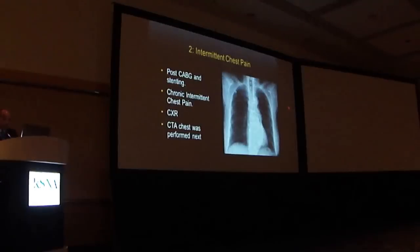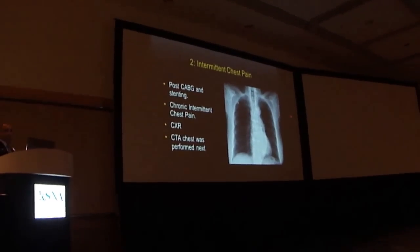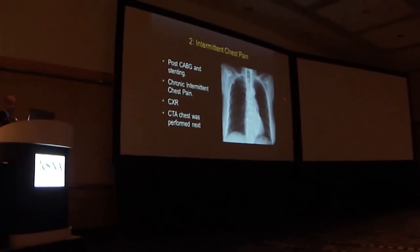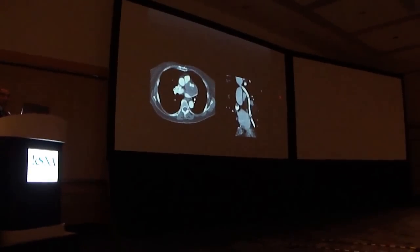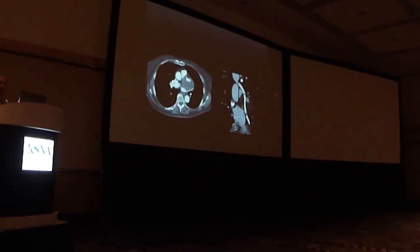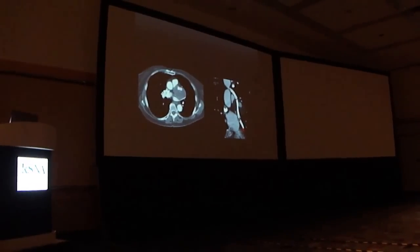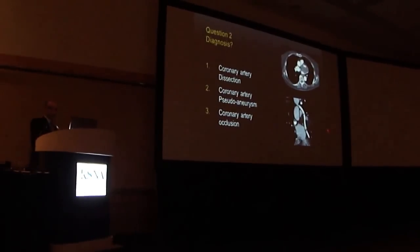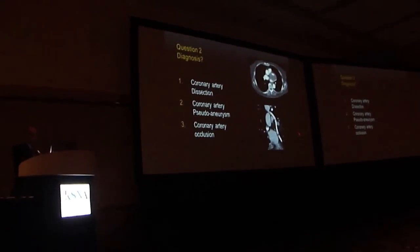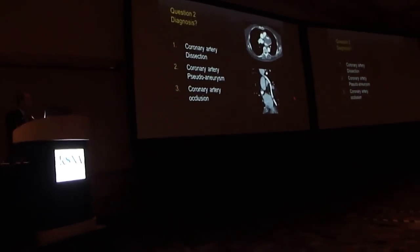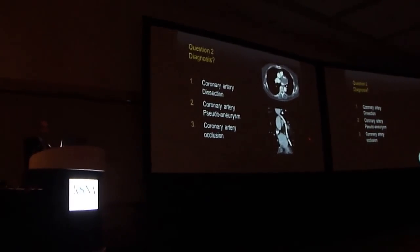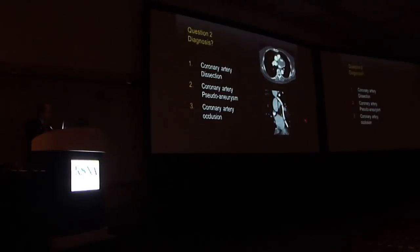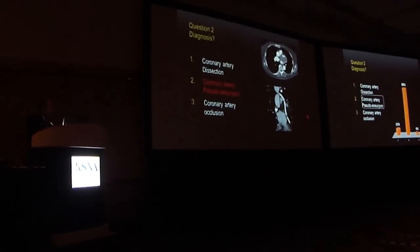Next case: intermittent chest pain. Patient was post-CABG and coronary artery stenting. Chest x-ray was unremarkable and CTA of the chest was performed. You can see three stents and something additional — the stent with a lesion. Differential considerations were coronary artery dissection, coronary artery pseudo-aneurysm, or coronary artery occlusion. 84% correct — not bad.